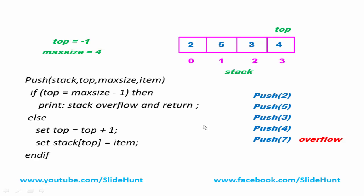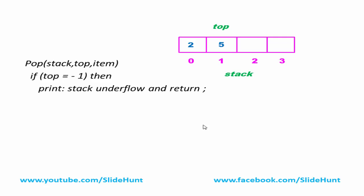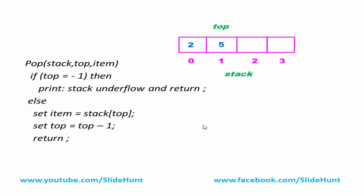Next we write the algorithm for the pop operation. To pop an element, we first check whether there is an element in the stack to be deleted. If top equals minus one, there is no element in the stack — this is called stack underflow — we print 'stack underflow' and return. Otherwise, we assign the top element to 'item': item = stack[top]. Then we decrement top by one and return.